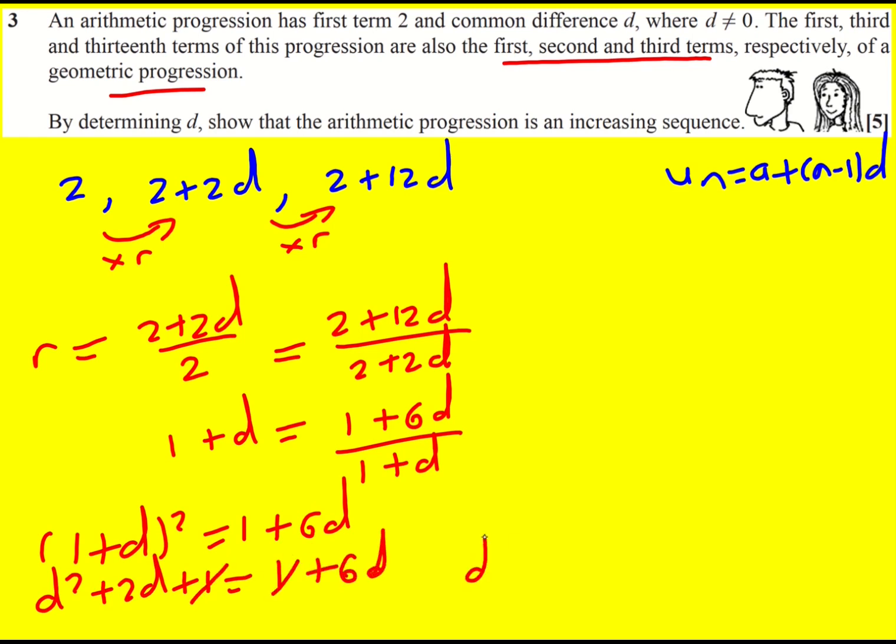The ones cancel, d squared minus 4d is equal to 0. d times d minus 4 is 0. So d equals 0 or 4.